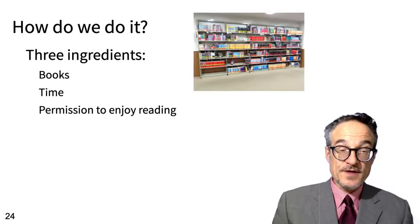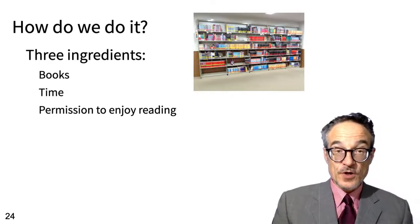How do we do it then? There are three things we need. One of them is books. We have books. We can talk about that in a moment. The other one is time. It seems many people have lots of time at the moment.